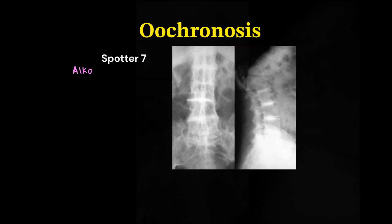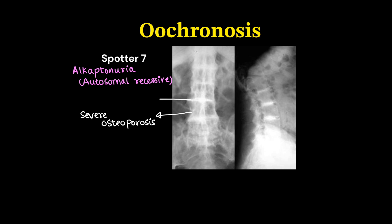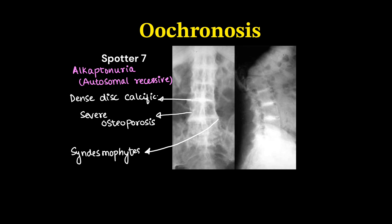This is a case of alkaptonuria, which is an autosomal recessive condition. We can see severe osteopenia of the vertebral bodies and dense disc calcifications between the vertebral bodies. There can also be syndesmophytes or bridging osteophytes, and disc narrowing will be present.